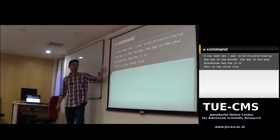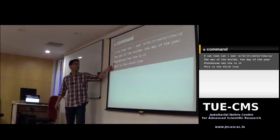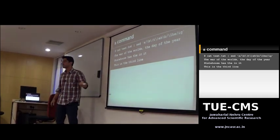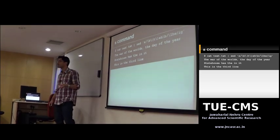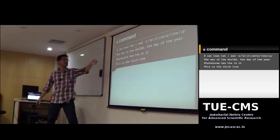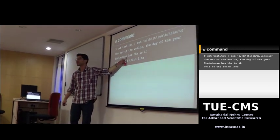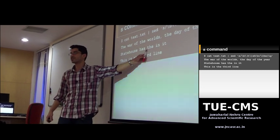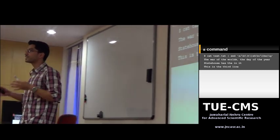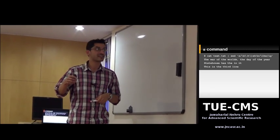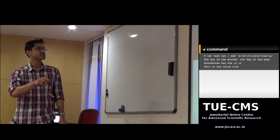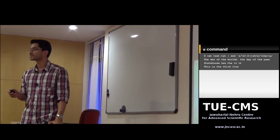Looking at the output, 'statehouse' is preserved because 'teh' inside it didn't match. All standalone occurrences of 'teh' (in any case) are correctly replaced. A word boundary is defined as a word character followed by a non-word character, or vice versa. Word characters are A-Z, a-z, 0-9, and underscore. Even a period or end-of-sentence qualifies as a non-word character, so \b works correctly at sentence endings too.